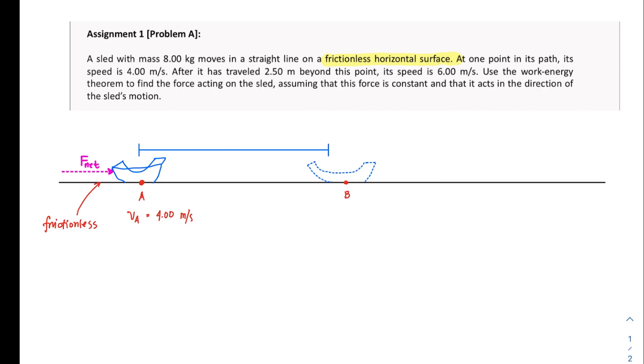Point A is the point where its speed is initially at 4 meters per second, and then after it has traveled from the problem, this distance displacement, which is equal to 2.50 meters, you arrive now at point B, which also has a distinct velocity, which is given to be equal to 6.00 meters per second.